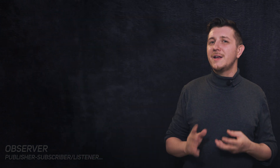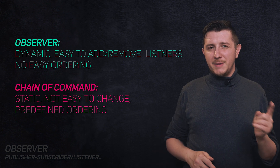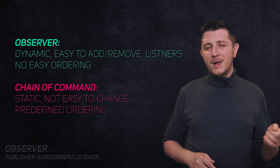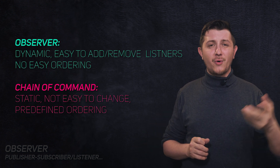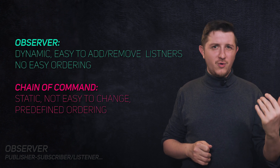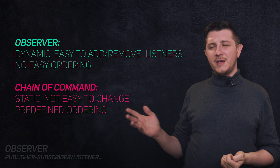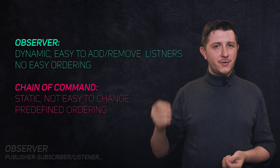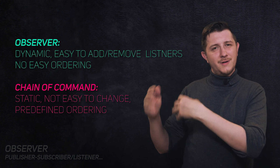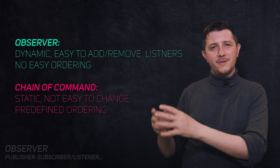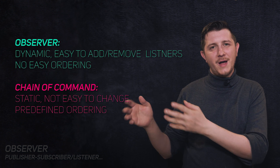We want to use an observer when we have a dynamic list of subscribers. Notice that it is kind of similar to chain of responsibility, but it has its differences. One is dynamic — you can add more and more, but you don't have much control over the sorting of those; it's whoever was first. The second one gives you greater control over order, but changing the list of handlers, adding new or removing them, is way harder.